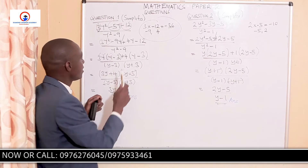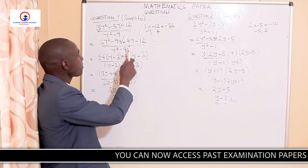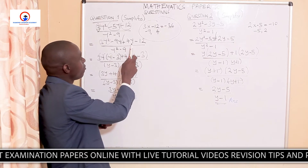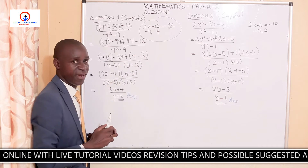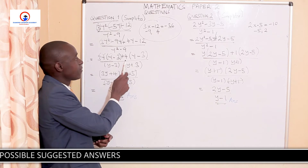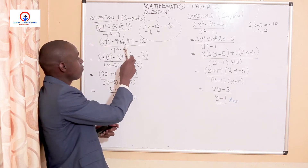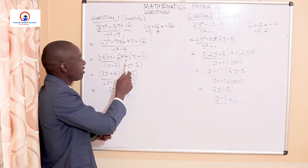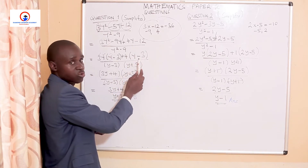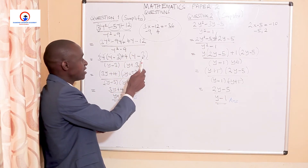Now the question is: what is common in the expression 4y minus 12? We need to factor it out. When you factorize, the common factor is positive 4, which I've removed outside. After removing it, what has remained where there was 4 is the y alone. The negative sign drops there, and 4 divided into negative 12 gives me negative 3.